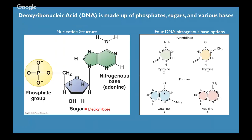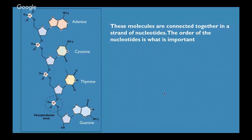There are only four different bases: cytosine, thymine, guanine, and adenine — often shortened to C, T, G, A. These nucleotides are strung together through their phosphate groups, forming the backbone of the DNA, with a variable nitrogenous base off each deoxyribose. So you see adenine, cytosine, thymine, guanine in sequence. It's really this order of the nucleotides that is so important. When people talk about a DNA sequence, they're talking about the order of the nucleotides in that strand of DNA — for example, A, G, G, T, T, C, A, G.